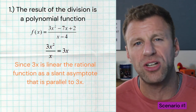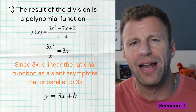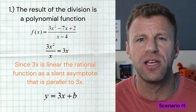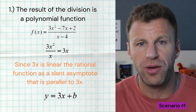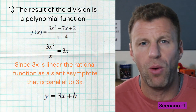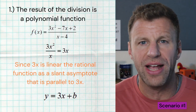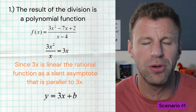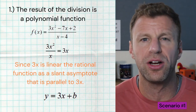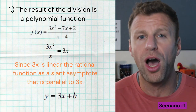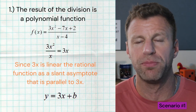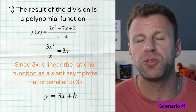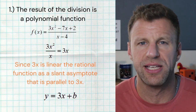Now, what about the y-intercept of the slant asymptote? Well, we'll learn that in a couple topics in a future video. But we know it's parallel to that given polynomial, which means they have the exact same slope.